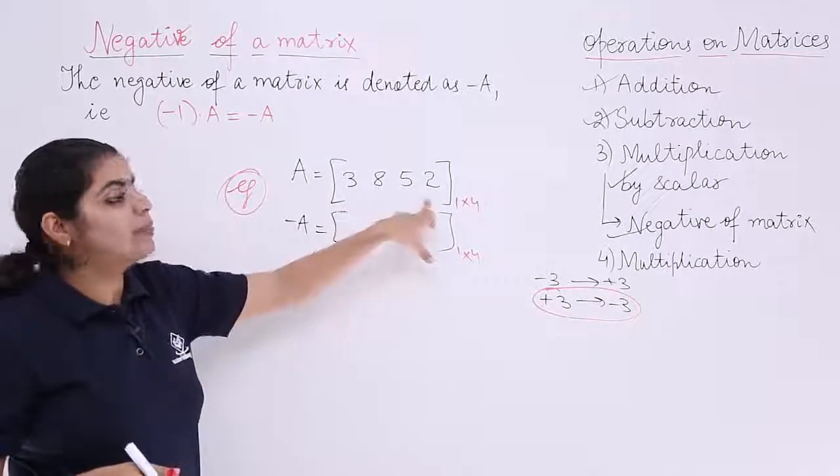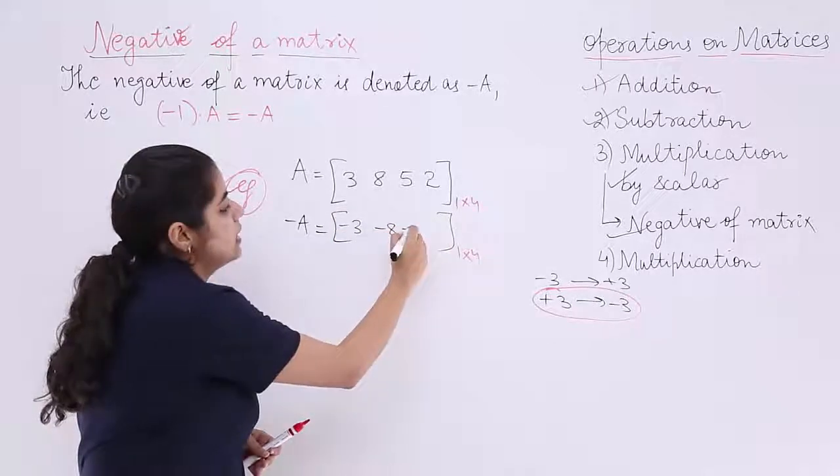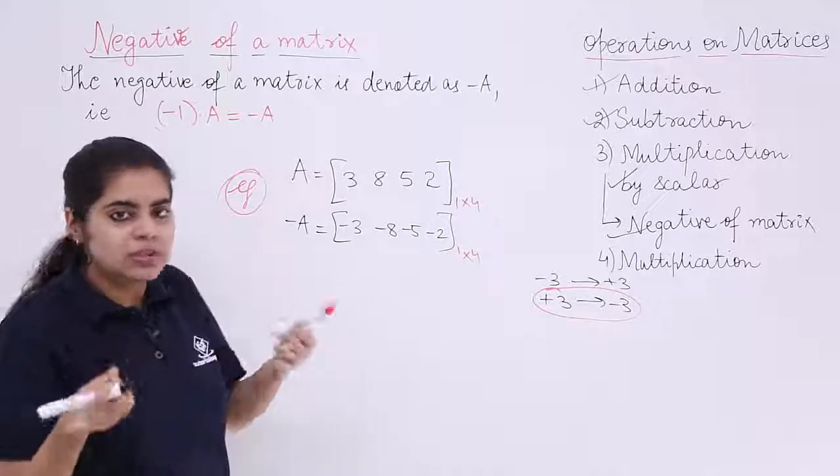Now negative means what? You multiply each element by minus 1, so it becomes minus 3, minus 8, minus 5, minus 2. So this is the first example which students find very easy.